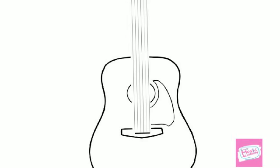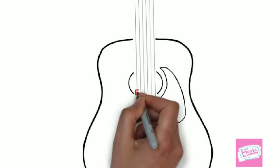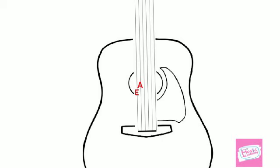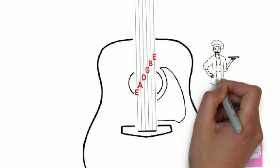The string names from lowest pitch to highest pitch are E, A, D, G, B, and E again. To help you remember the string names,